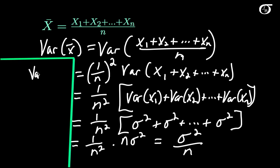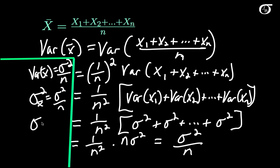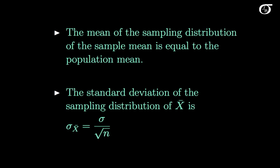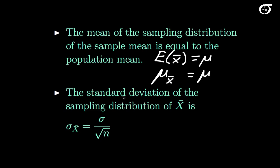The variance of x-bar is equal to sigma squared over n. In other notation, sigma squared sub x-bar equals sigma squared over n. The standard deviation of x-bar is equal to the square root of the variance, which is sigma over the square root of n. To summarize: the mean of the sampling distribution of the sample mean equals the population mean — E[x-bar] = mu. And the standard deviation of the sampling distribution of x-bar, sigma sub x-bar, is equal to sigma over the square root of n. We're going to use that in a few different places in the future.